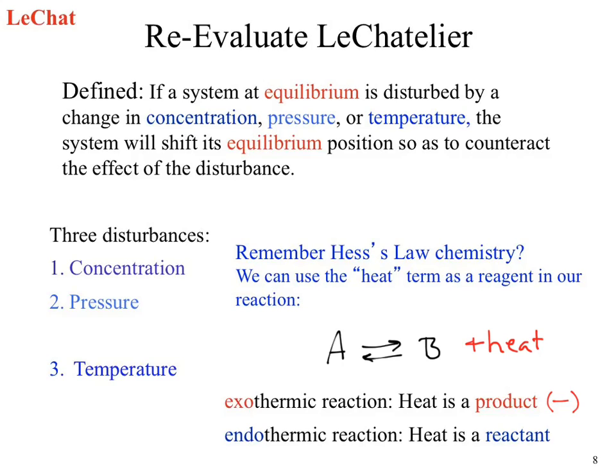What if it was an endothermic reaction? What would our sign be? We would see a positive value. Now where would our heat term show up? As a reactant. So when given either exothermic, endothermic, or changes in enthalpy as positives and negatives, we can add the heat term to our balanced equation. We don't need to know what the number is — we don't put the heat term into Q and K. All we need to know is where is that heat — is it a reactant or a product?